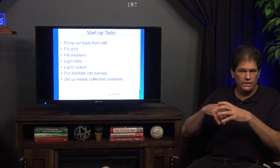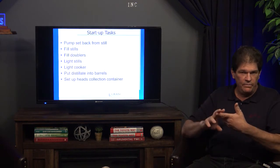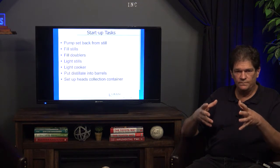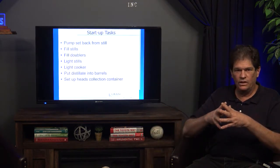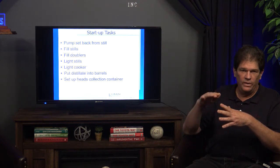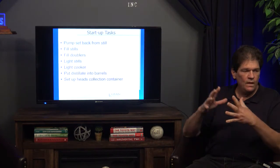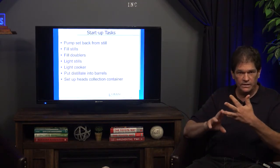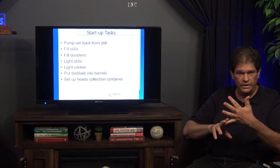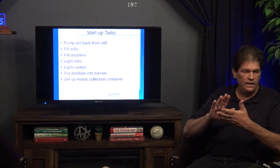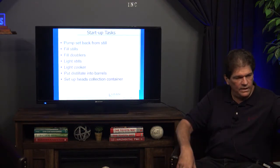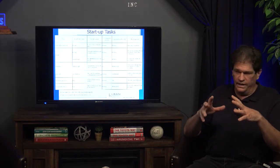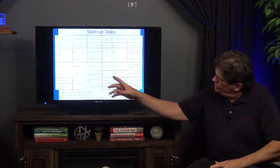Looking at a quick list of tasks: first, get the setback from the still — the liquid left after operation — which we use in the next cooking water to lower the pH and give the yeast a favorable environment. Then fill the stills, fill the doublers on the stills, light the stills to get them started, put the distillate into barrels, and set up the heads collection containers.